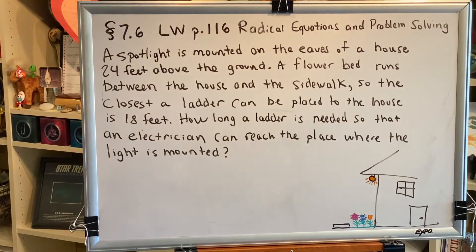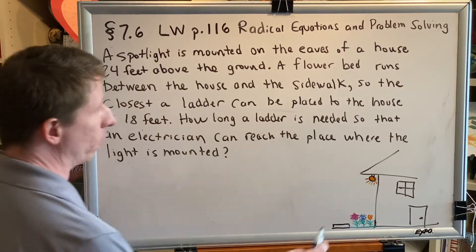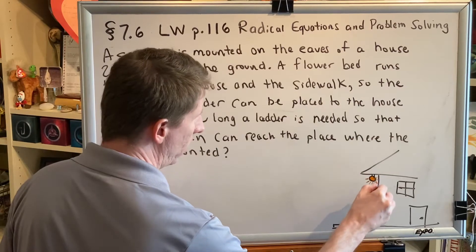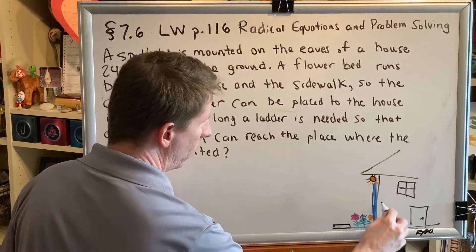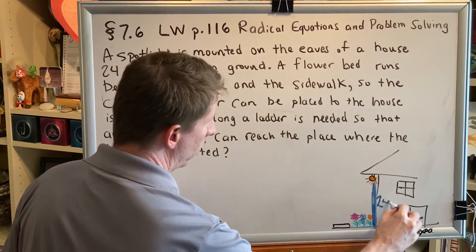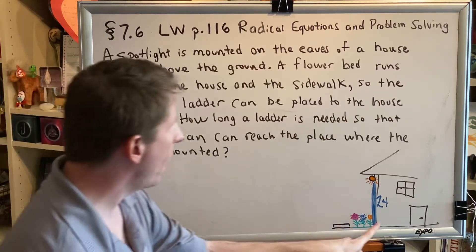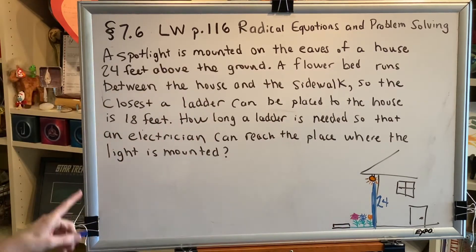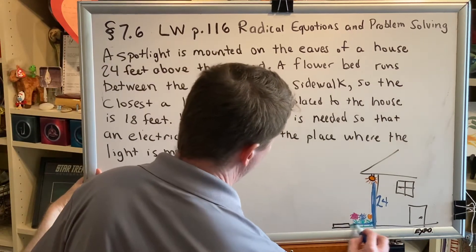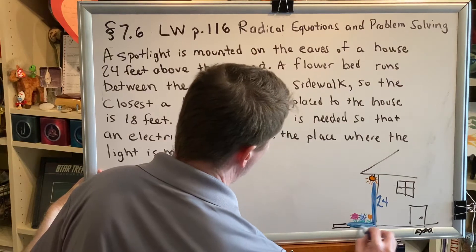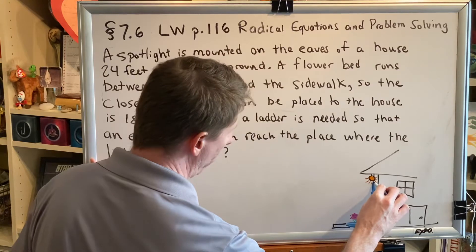It says that the light is mounted 24 feet above the ground, so this distance right here is 24 feet. And it says that the flower bed, which is between the house and the sidewalk, is such that the closest a ladder can be placed to the house is 18 feet. So this distance right here is 18 feet. You can see that creates a triangle where the ladder will go.